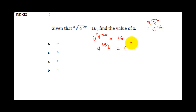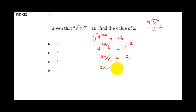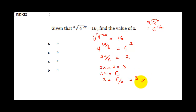Now, 16 is equal to 4 raised to the power 2. Our bases are now equal, so we equate the indices: 2x over 3 equals 2. Cross-multiplying gives 2x equals 6, so x equals 6 divided by 2, which is 3. You can confirm your answer by substituting x = 3 back in. Our final answer is D.